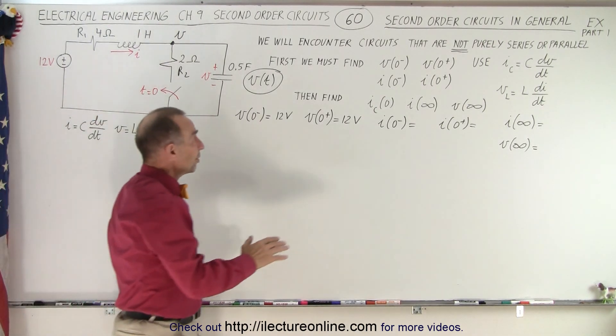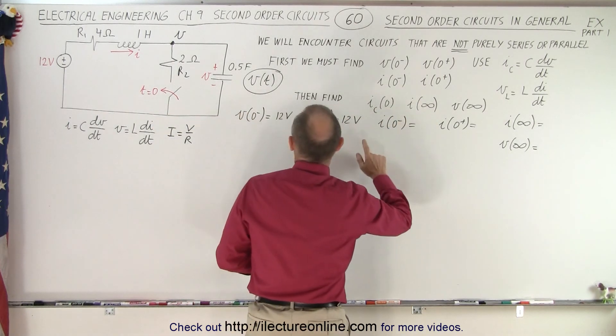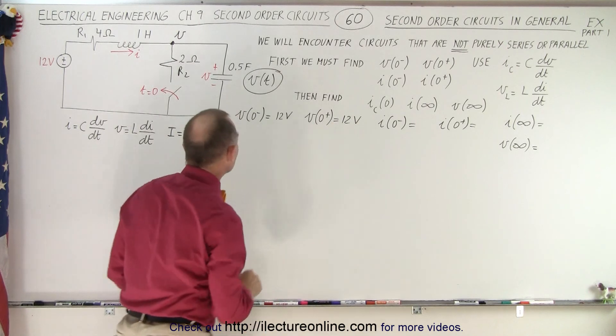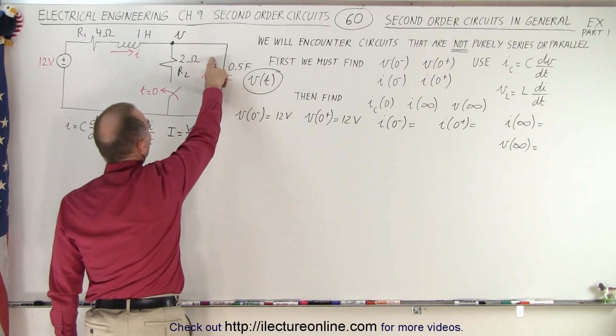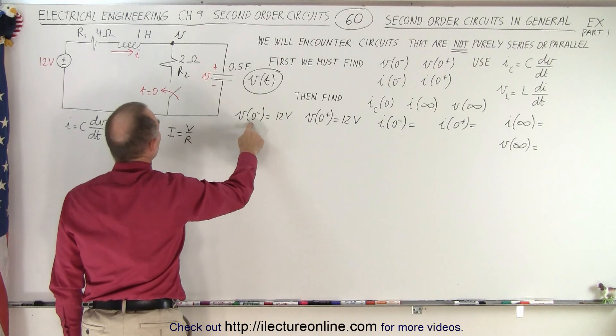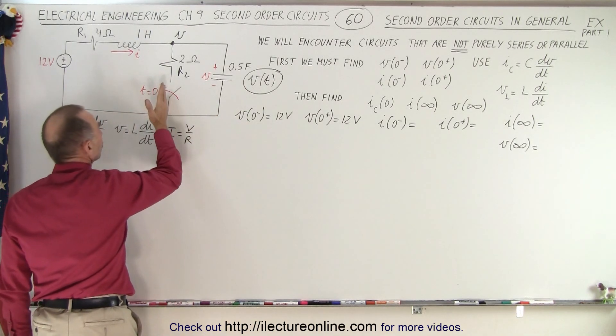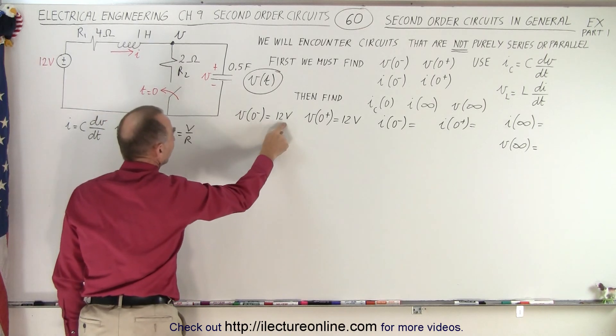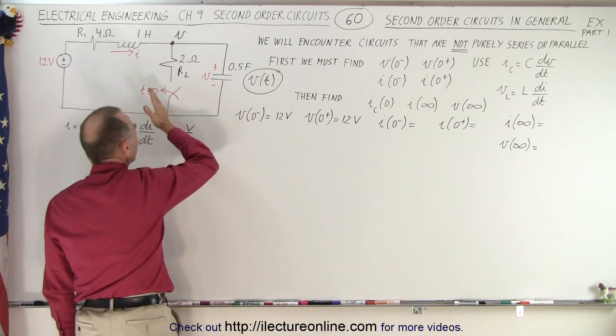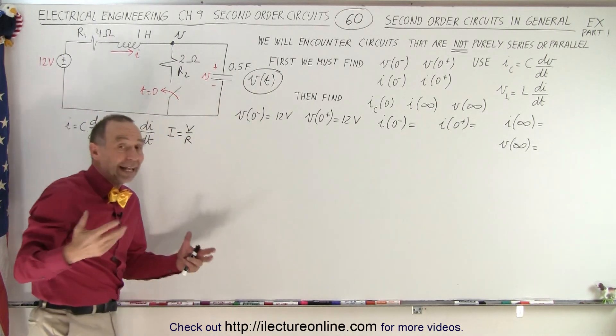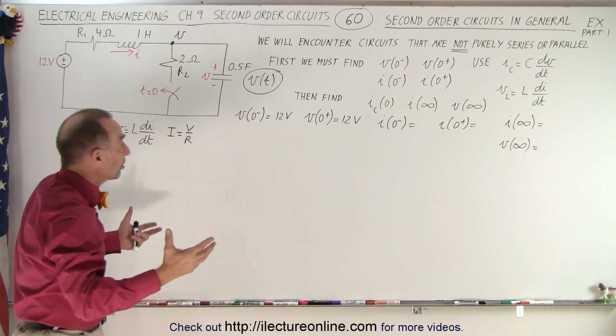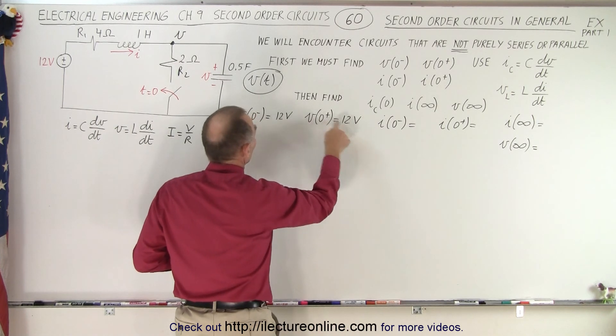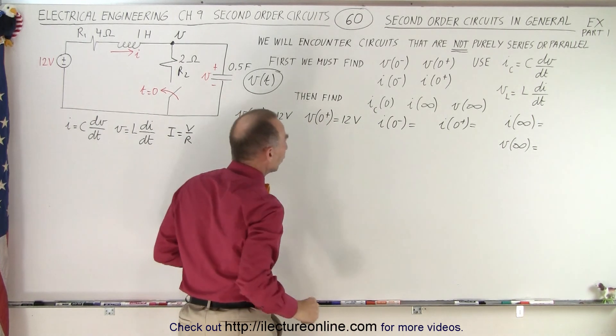So we will need to find some of the initial voltages and some of the initial currents. And I already have started ahead here. Notice that the voltage across the capacitor here before the switch is closed, well, that voltage has to be equal to the voltage of the source, 12 volts. And then right after the switch is closed, the capacitor has not had a chance to empty itself out or fill up more depending upon what's going on in the circuit, so that it will still be at 12 volts.